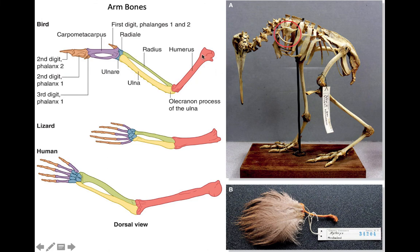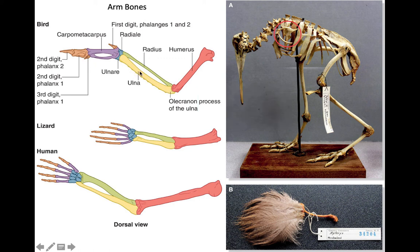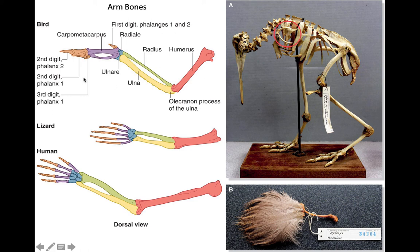Looking at the wing itself, the basal bone is the humerus, attaching to the pectoral girdle. Then we see a substantial radius and ulna. The ulna has bumps on it — the attachment sites for the secondary flight feathers, representing calcium deposits providing additional skeletal support. The hand bones are largely fused into a general region called the manus, with the largest part called the carpometacarpus. This structure produces the attachment for the feathers that are important in flight for most birds.